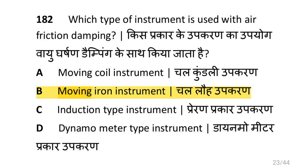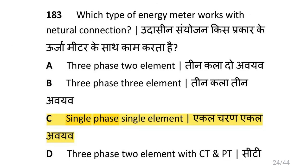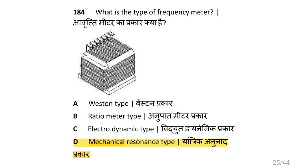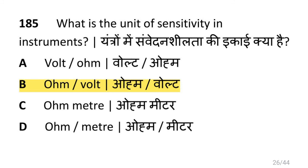Which type of wattmeter is used for three-phase measurement? That is two-element three-phase wattmeter. Which type of instrument is used in air friction damping? That is moving iron instrument. Which type of energy meter works with neutral connection? That is single-phase single-element. Which type of frequency meter is there? That is mechanical resonance type. What is the unit of sensitivity in an instrument? That is ohm per volt.